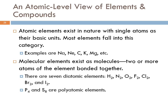Atomic elements are those elements that exist in nature as single individual atoms, and most elements fall into this category. Then there are also molecular elements — these exist as molecules. You don't find, for example, oxygen atoms in nature; you find oxygen molecules. There are seven elements that are diatomic, meaning they form molecules of two atoms.